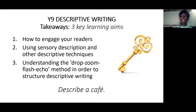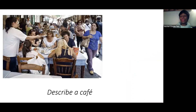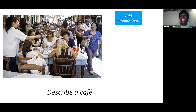This is for a specific assignment: describe a cafe. This is one image of a cafe, but you wouldn't necessarily be given an image — you might just be given the title 'describe a cafe.' With any descriptive writing, you need to think about adding imagination.